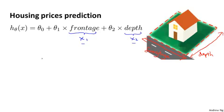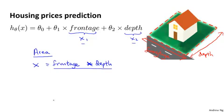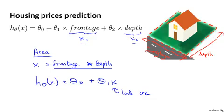So if I want to predict the price of a house, what I might do instead is decide that what really determines the size of a house is the area, really the land area that I own. So I might create a new feature, which is frontage times depth. This is a multiplication symbol. So frontage times depth, because this is the land area that I own. And I might then select my hypothesis using just one feature, which is my land area, because the area of a rectangle is the product of the length of a size. So depending on what insight you might have into a particular problem, rather than just taking the features frontage and depth that we happen to have started off with, sometimes by defining new features, you might actually get a better model.